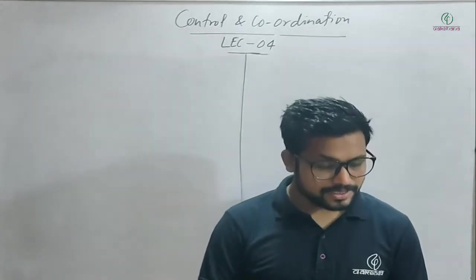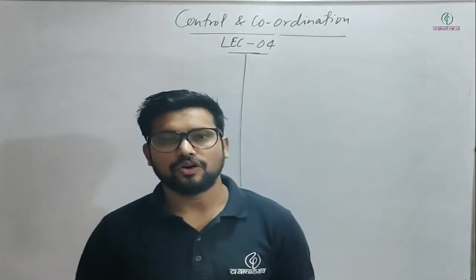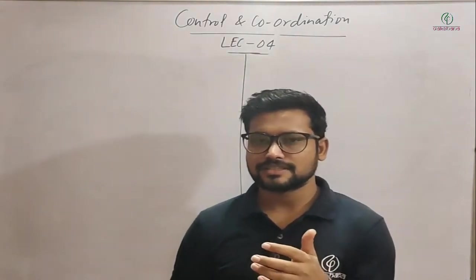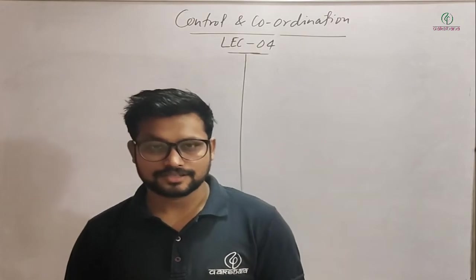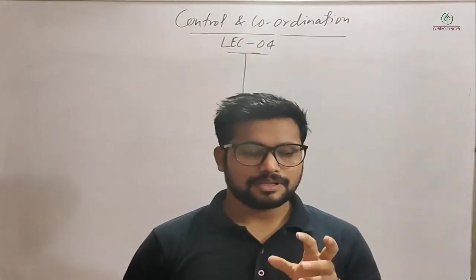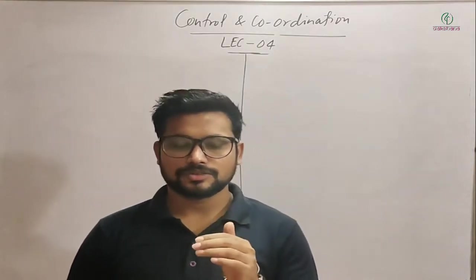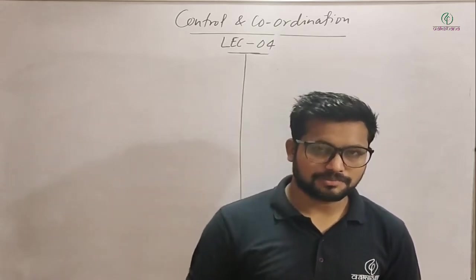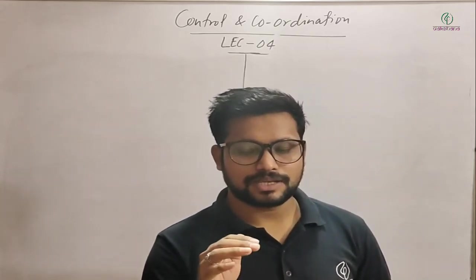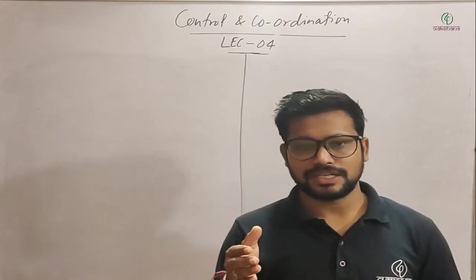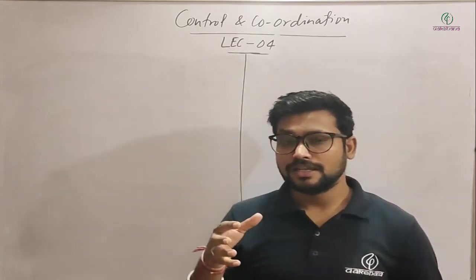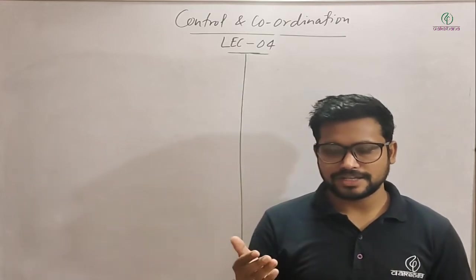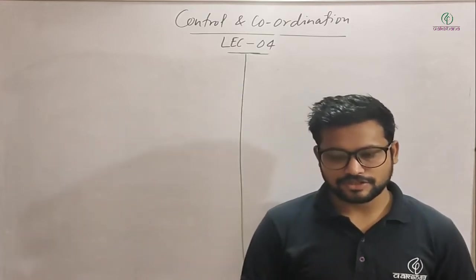Today's topic is lecture number 4 of Control and Coordination. In my last class, I have already discussed about the brain. The main parts of the brain are in three regions: forebrain, midbrain and hindbrain. The forebrain includes cerebrum, thalamus and hypothalamus. About all these parts I have already discussed in detail in my last lecture.